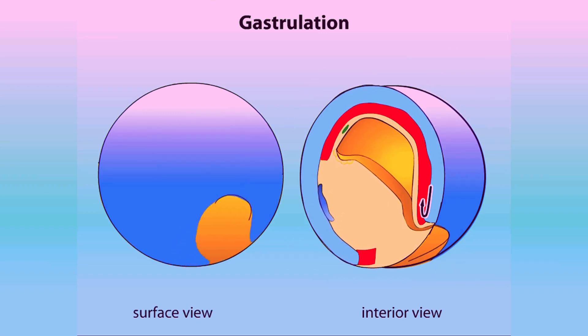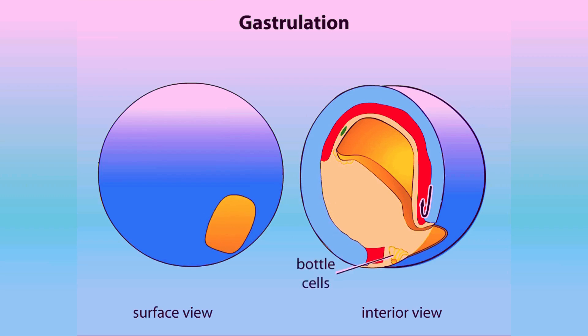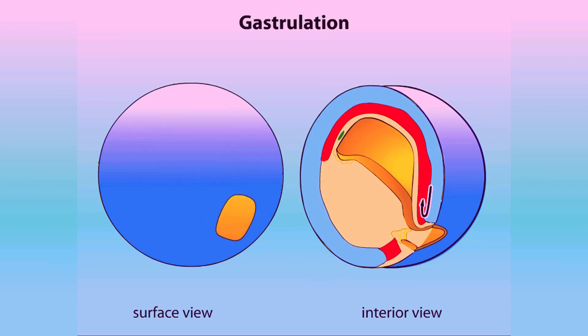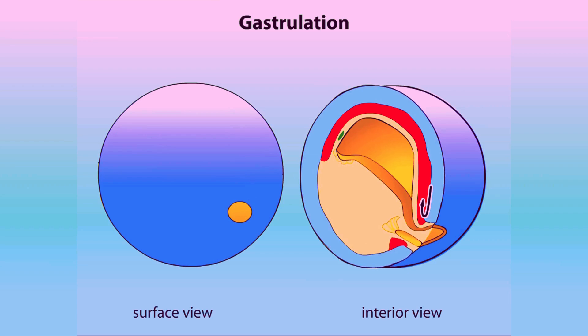As the ectoderm extends around the embryo, another set of bottle cells forms. These cells migrate into the embryo and the other surface cells follow them, creating the ventral lip of the blastopore.